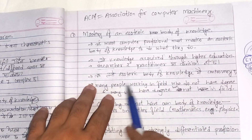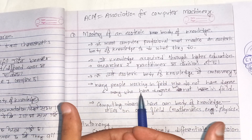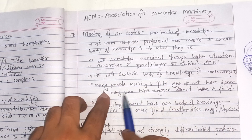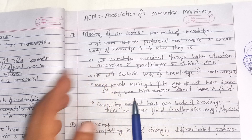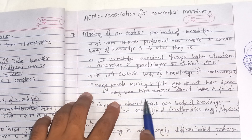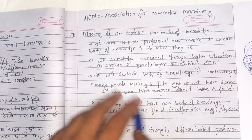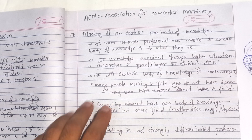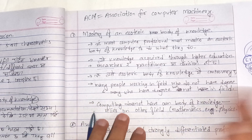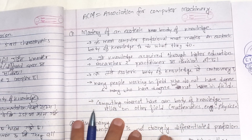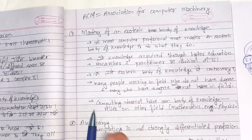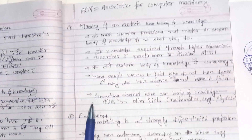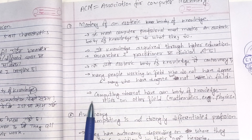There is a controversy in the esoteric body of knowledge. Many people working in the field do not have a degree, and many who have a degree do not work in the field. Another issue is that computing does not have its own body of knowledge — it relies on other fields: mathematics, engineering, and physics. Computing does not have its own distinct body of knowledge.